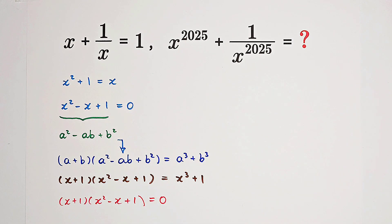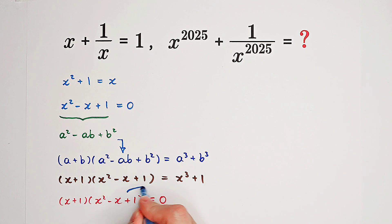Because 0 times anything equals 0. Our left-hand side is equal to x cubed plus 1 according to our factorization of a cubed plus b cubed.